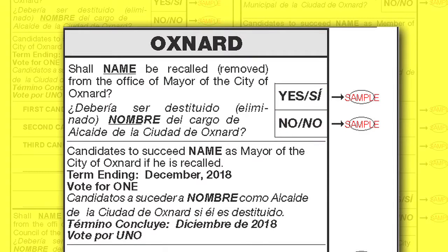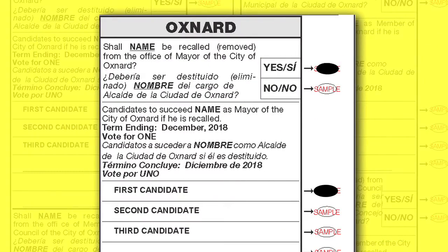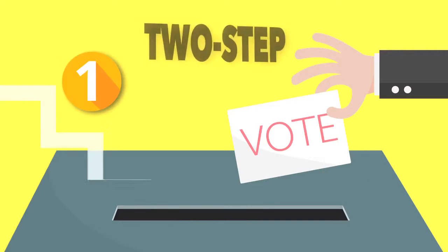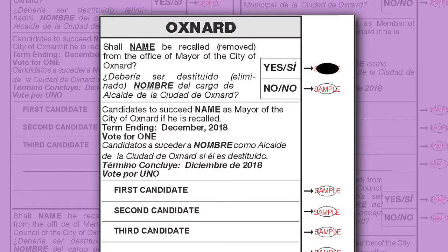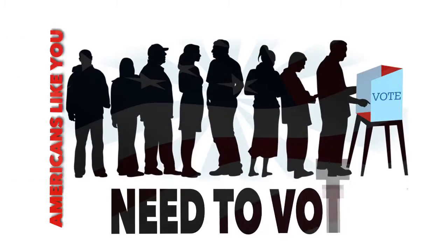The yes-no step for the recall is independent of the candidate voting step. You can vote in both steps, or one, or the other, or neither, for each office. Voters are encouraged to complete both steps, regardless of whether they are for or against the recall, to fully exercise their right to vote.